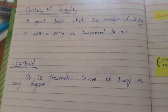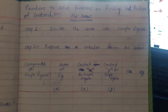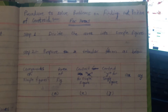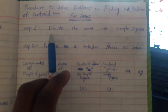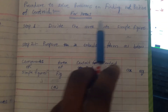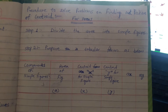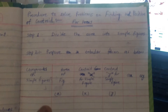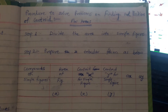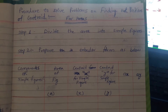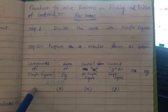Now we will see some numericals. First, we will see what is the procedure to solve problems on finding the position of centroid for areas — figures that have only areas — and we need to find the position of centroid for those area figures. We need to follow these steps.